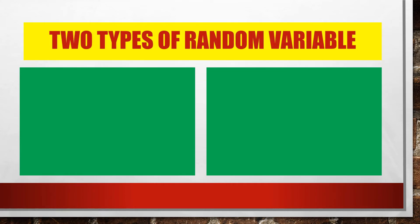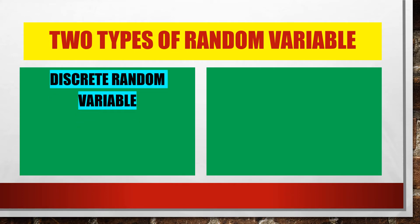We also have the two types of random variable. The first type of random variable is what we call the discrete random variable. And when we say discrete, we are talking about exact values.